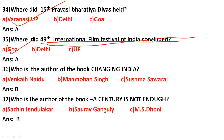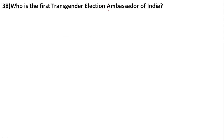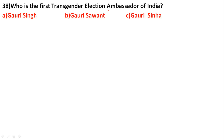Who is the author of the book 'Changing India'? The correct answer is Manmohan Singh. Who is the author of the book 'A Century is Not Enough'? The correct answer is Saurav Ganguly. Who is the first transgender election ambassador of India? The correct answer is option B: Gauri Sawant.